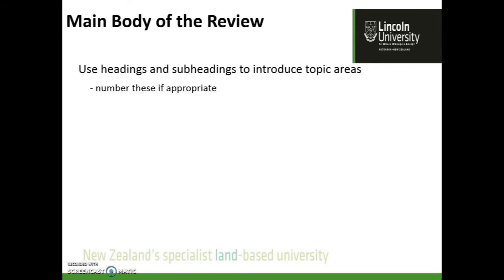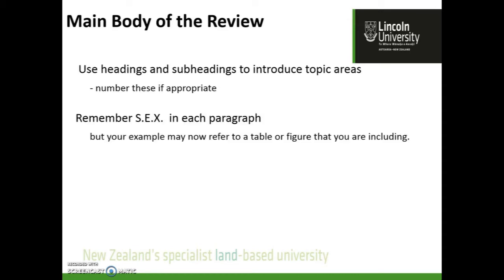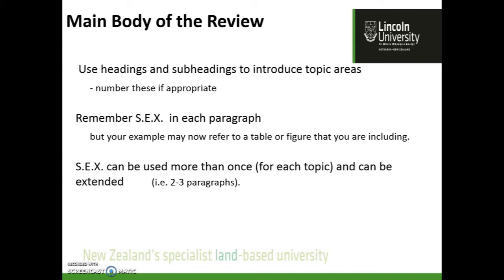In the main body you need to use headings and subheadings to introduce topic areas — you can number these if you want. Write again using statement, explanation, example. Your example may now refer to a table or a figure. It's important that you extract information — tables and figures — from the papers you've read and include them in your literature review. Make sure you grab important tables and either retype them or produce a high-quality reproduction. You might use the SEE structure more than once, with two or three paragraphs on a particular topic.